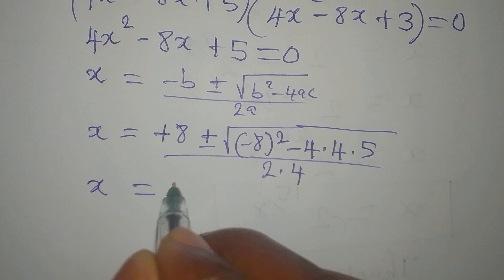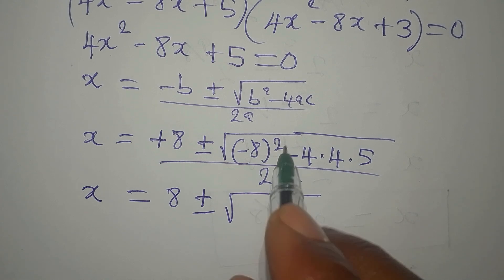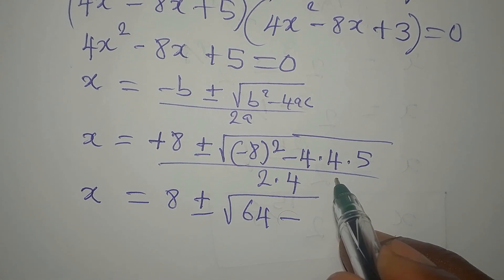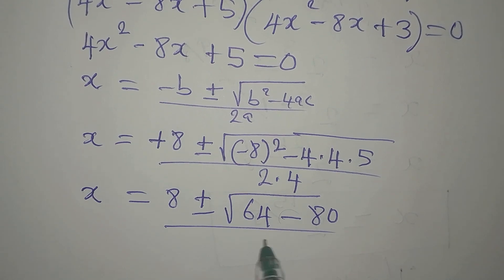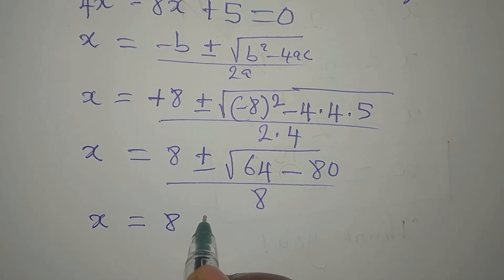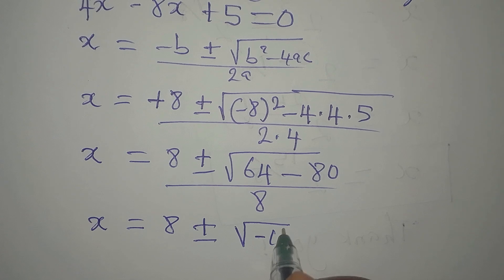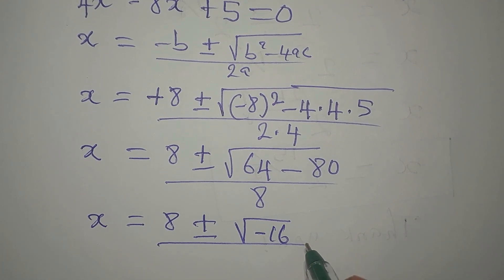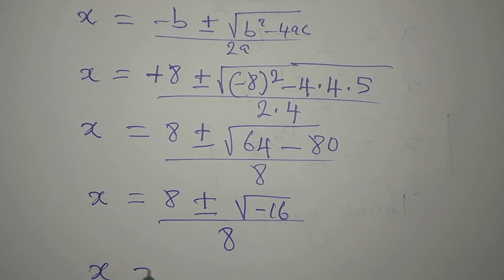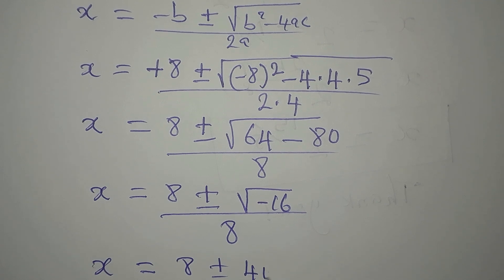So x is now 8 plus or minus the square root of: minus 8 squared is 64 (positive), then minus 4 times 4 times 5 — that is 16 times 5 which is 80 — all divided by 8. Don't let that 8 cancel prematurely because that would be wrong. So we continue: x equals 8 plus or minus the square root of 64 minus 80, divided by 8.